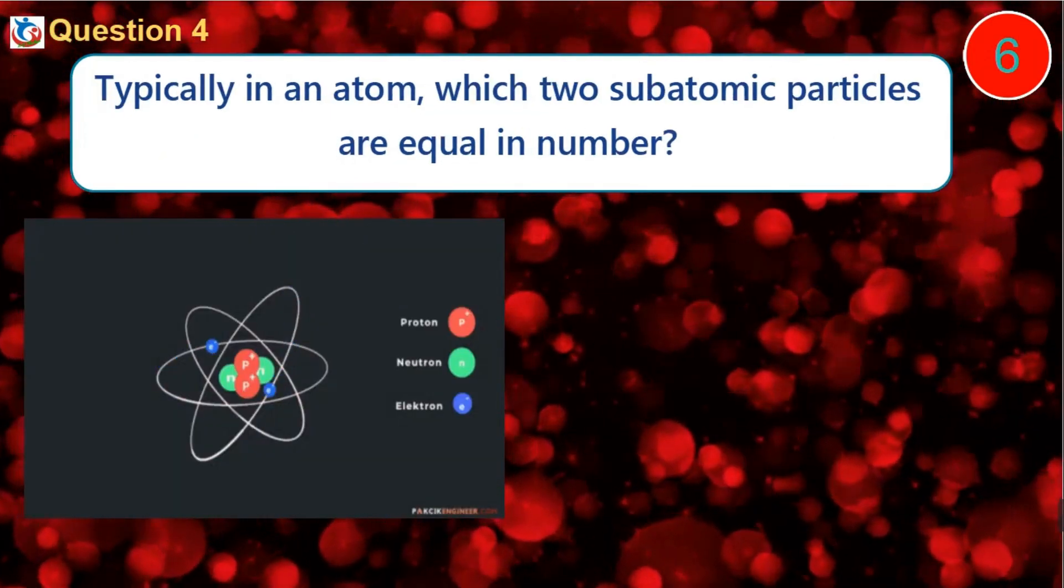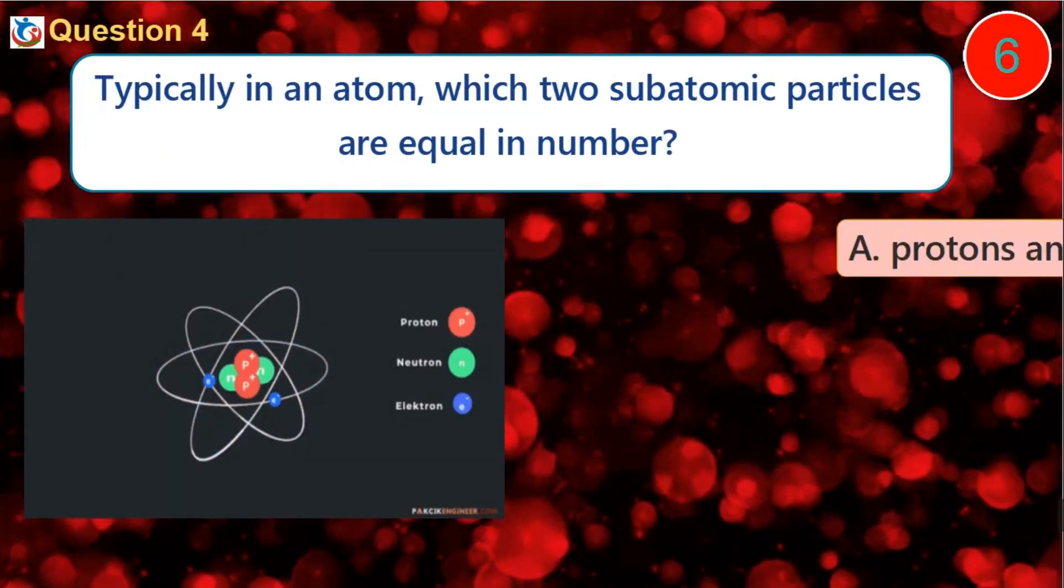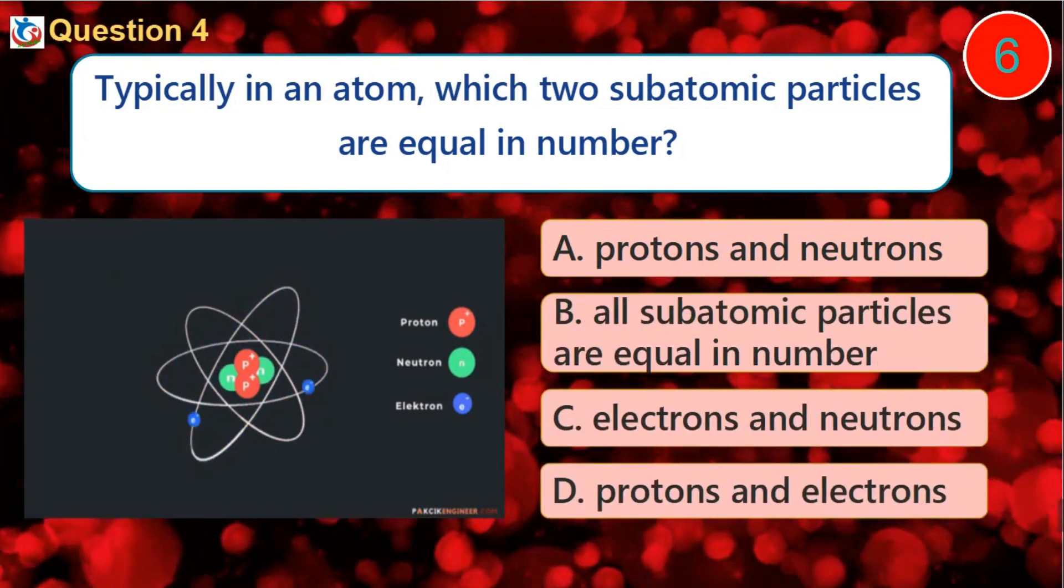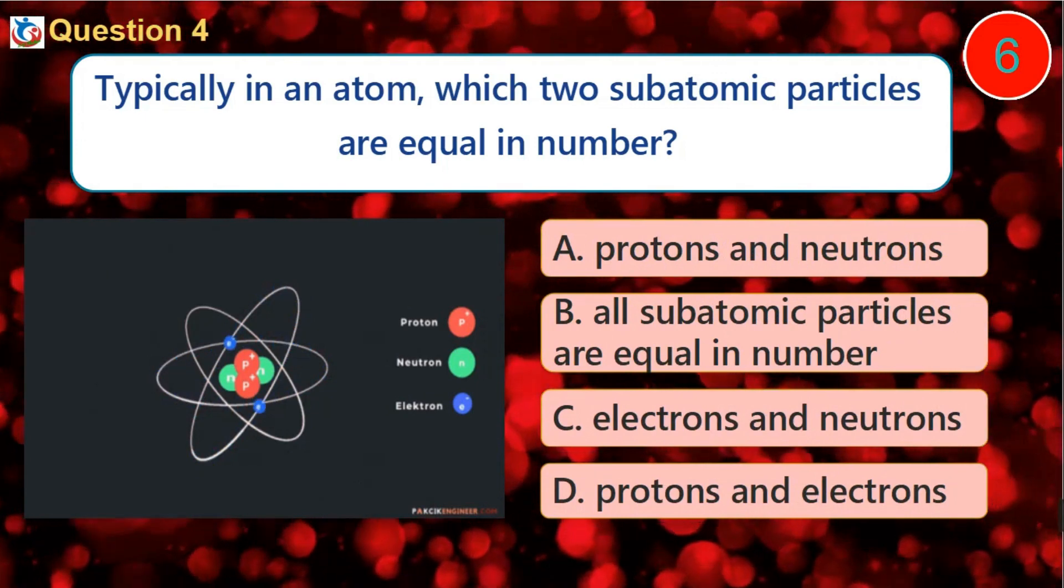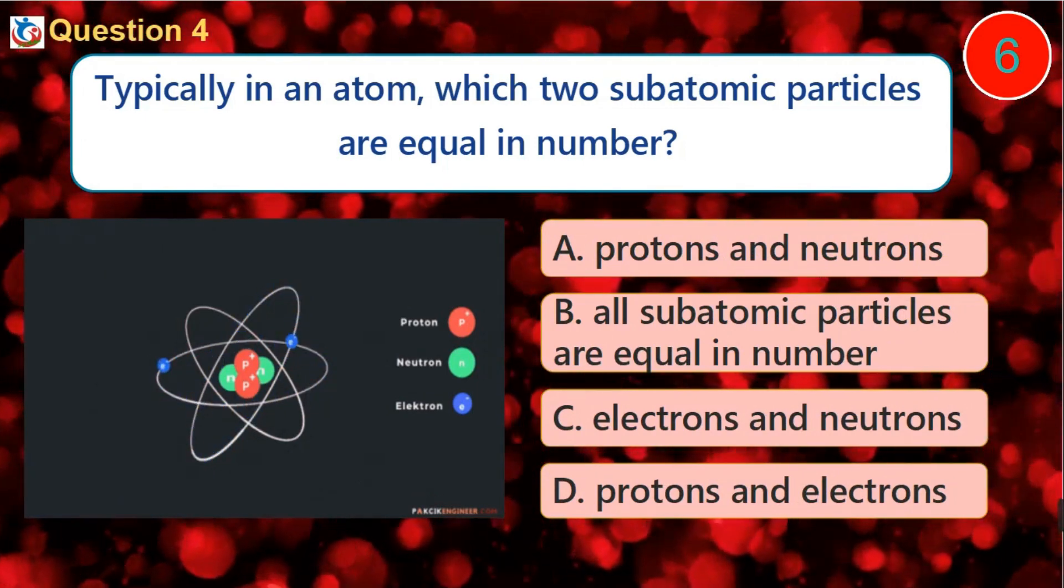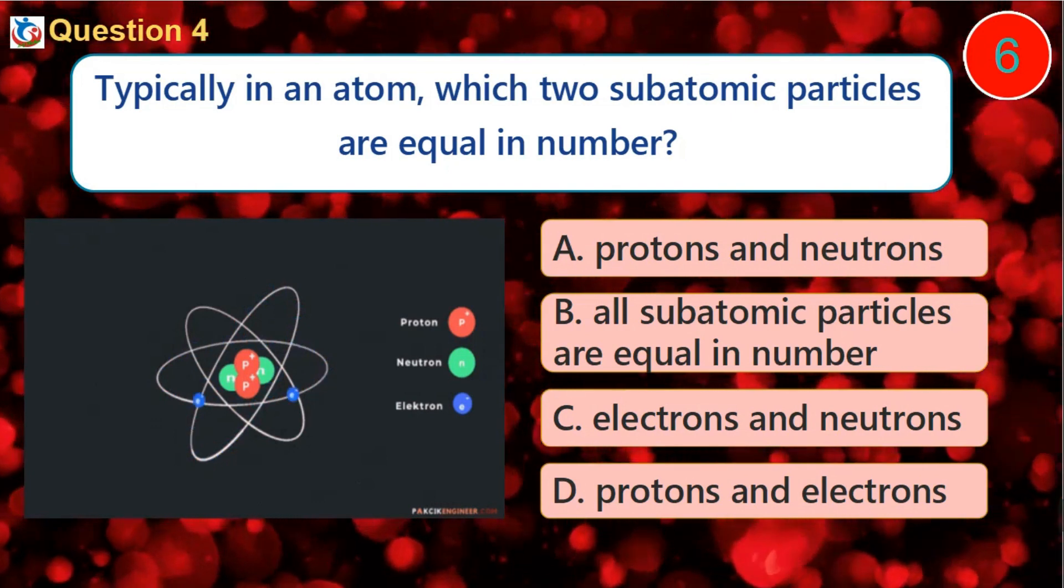Question 4. Typically in an atom, which two subatomic particles are equal in number? A. Protons and neutrons B. All subatomic particles are equal in number C. Electrons and neutrons D. Protons and electrons